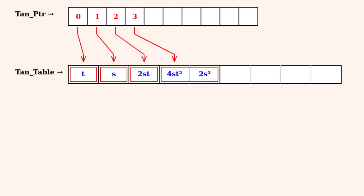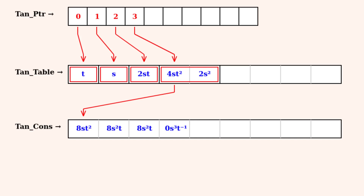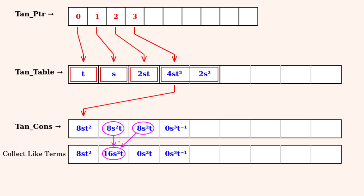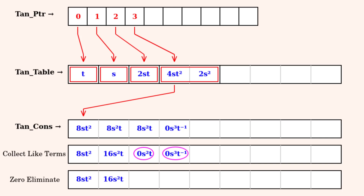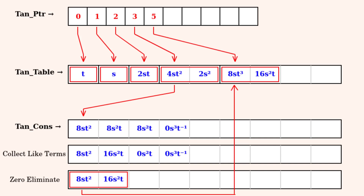To construct the next derivative, we start from the third derivative and calculate the fourth. We use the previously discovered formula to construct terms from the last derivative, then collect and add like terms together, placing the new coefficient in the first element of each group and zeroing out the duplicates. We then eliminate all zeros, swap terms if needed, and place the new expression into tan_table with an attached pointer.